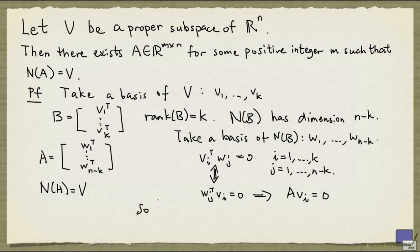And so all the basis elements V1 up to Vk are in the null space of A, and that means all vectors in V are in the null space of A. So we can say that V is a subspace of the null space of A.